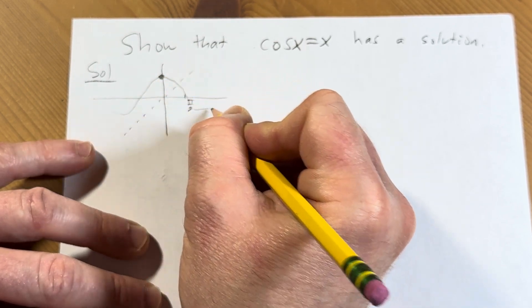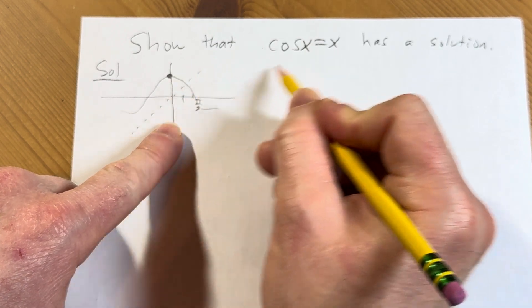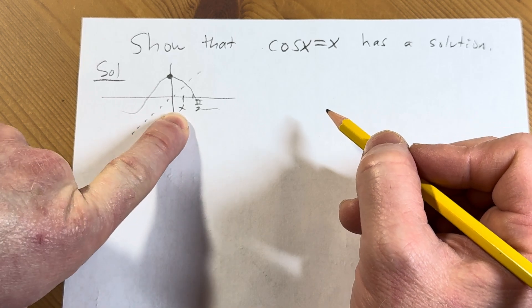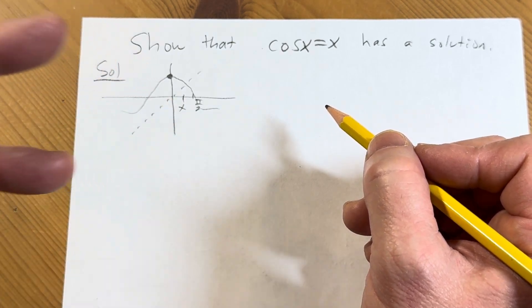So basically it has a solution and here is the solution. So we have to basically show that this number exists. This is called a fixed point by the way.